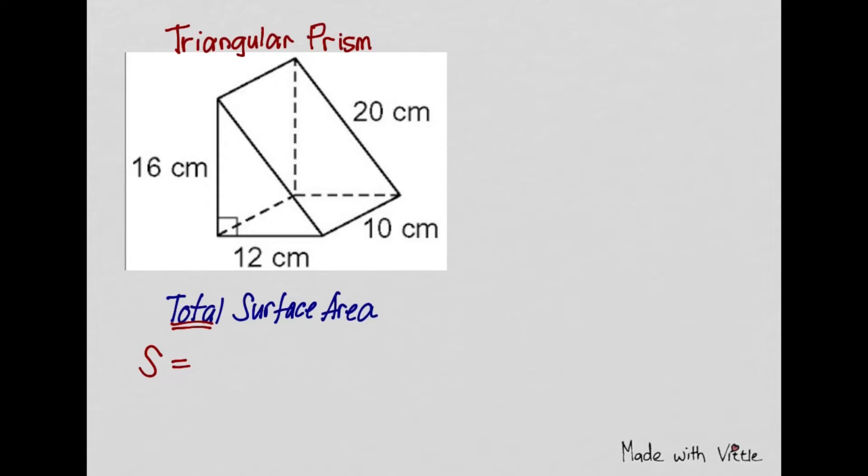First of all, find the lateral surface area. That will be perimeter times height. Then you will add the area of the two triangles.